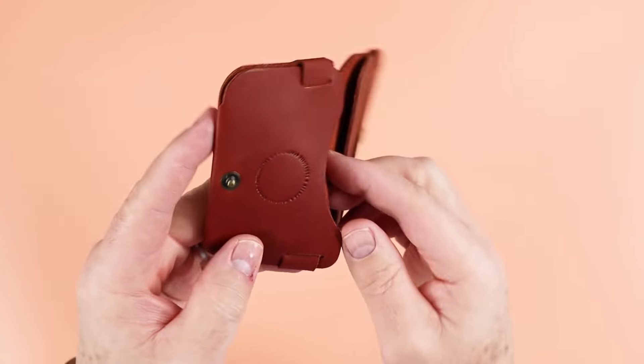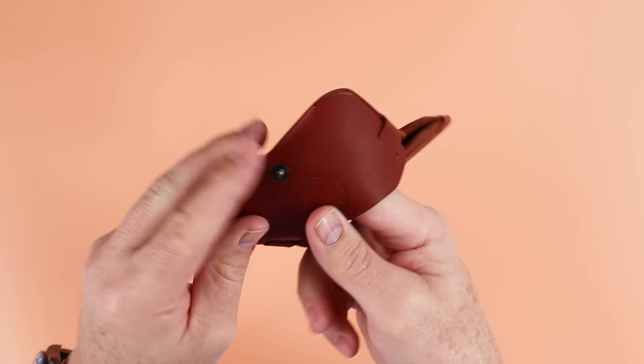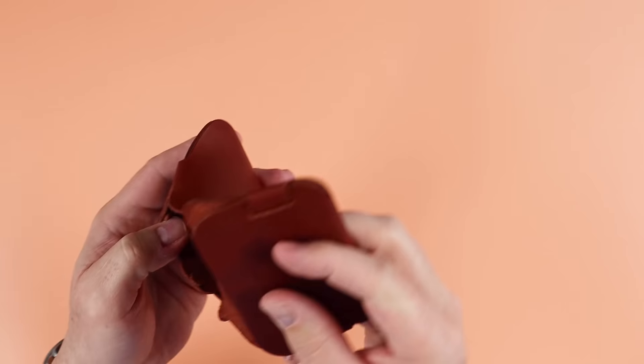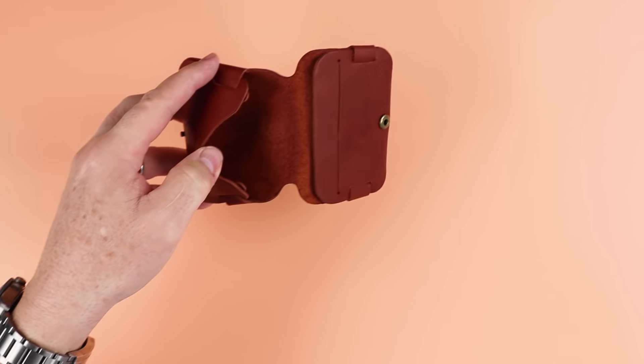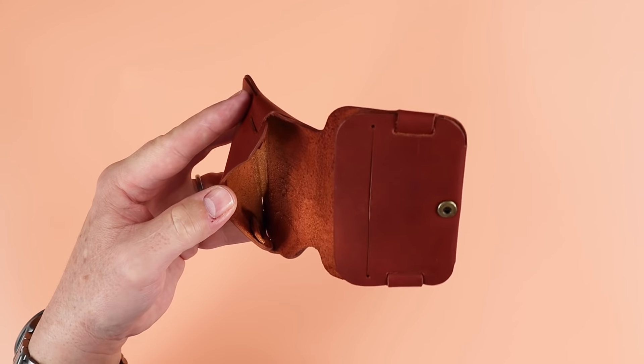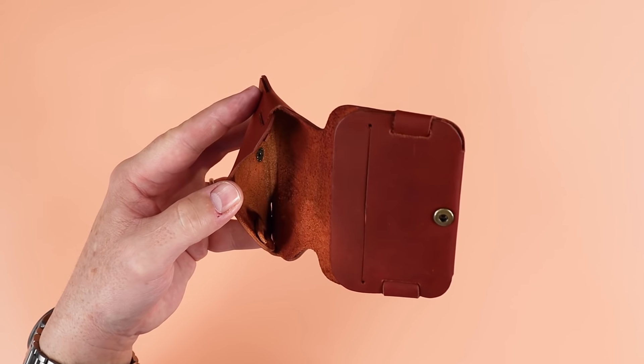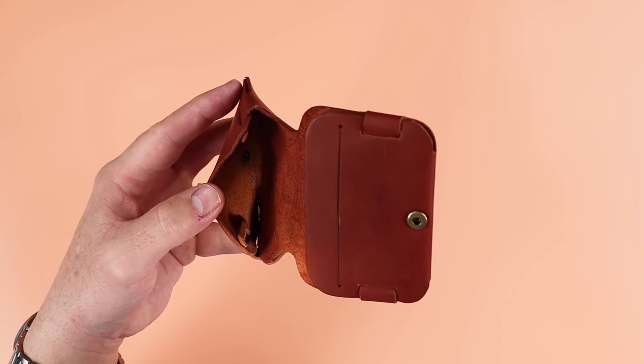You have a little snap in here. The fact is that this is all hidden and not only hidden, but you can see how it's unobtrusive. Let me get a little light in here. Unobtrusive for the little snap down there. This is not gonna damage your cards at all.